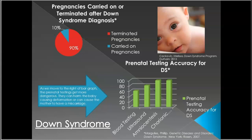I'm going to point out a few key features of this visual argument. One piece of evidence the student found for their argument essay was about pregnancies carried on or terminated — aborted — after the baby was diagnosed with Down syndrome. As you can see, 90% of mothers, when they discover their baby has Down syndrome according to the diagnosis, get an abortion, and only 10% carry on the pregnancies.